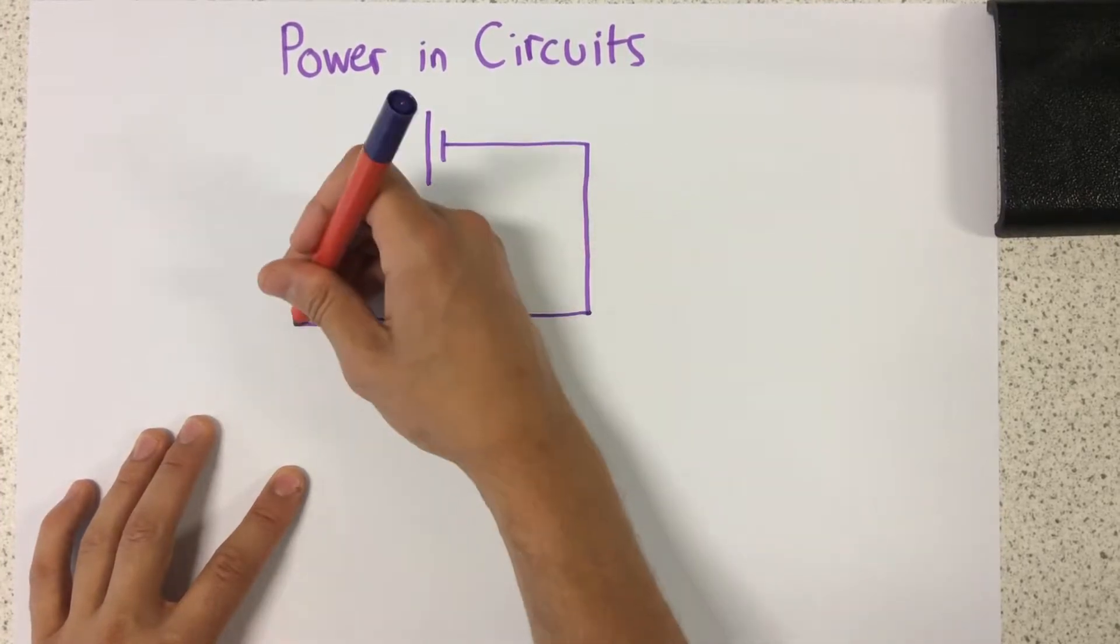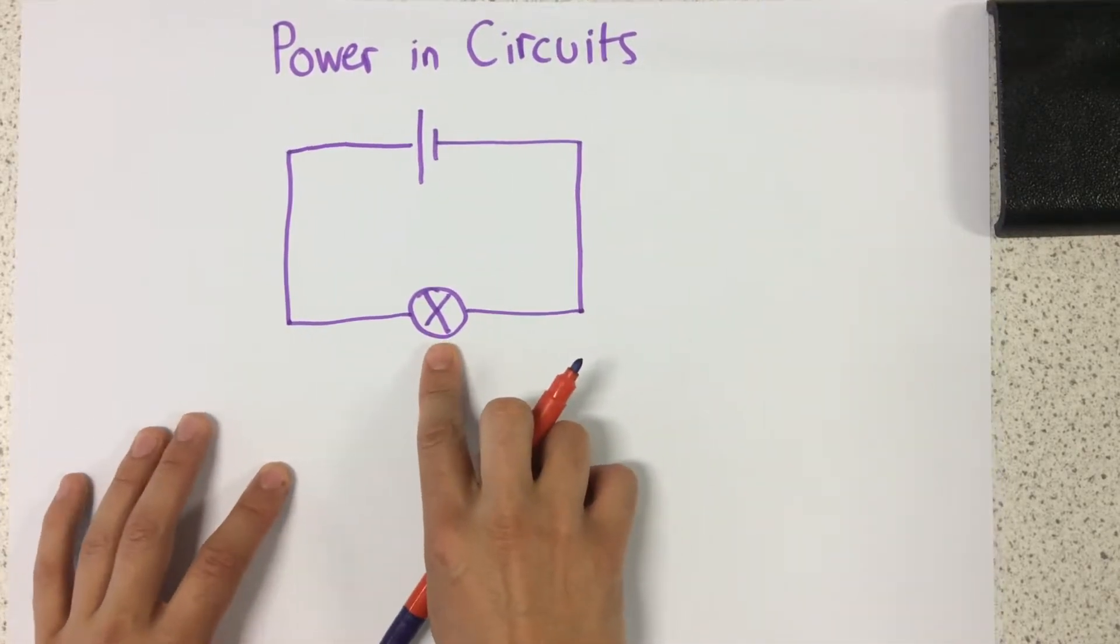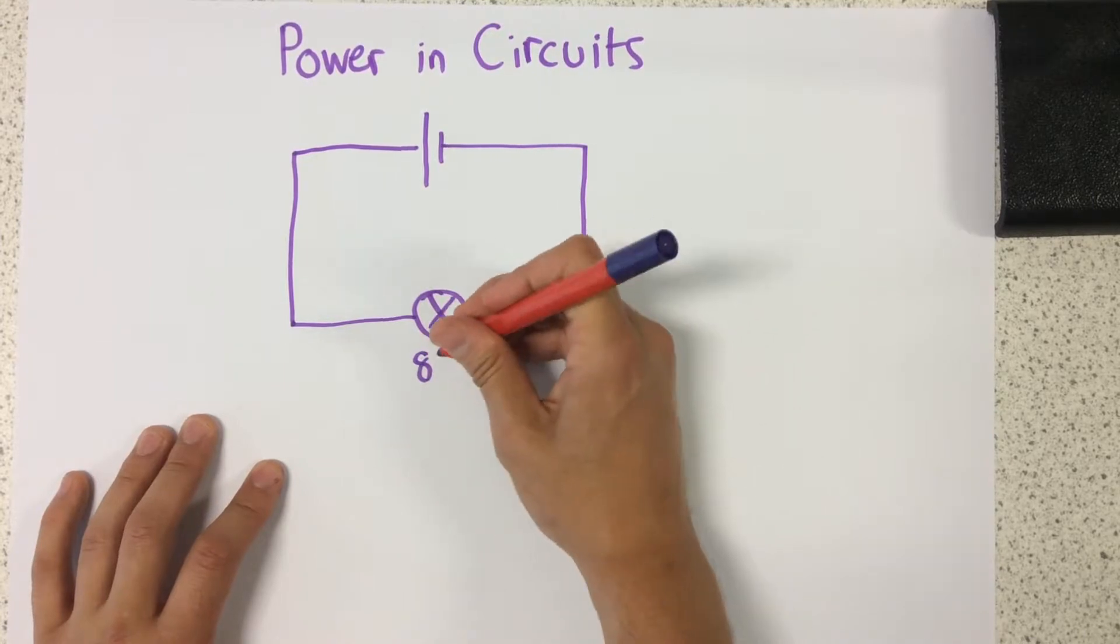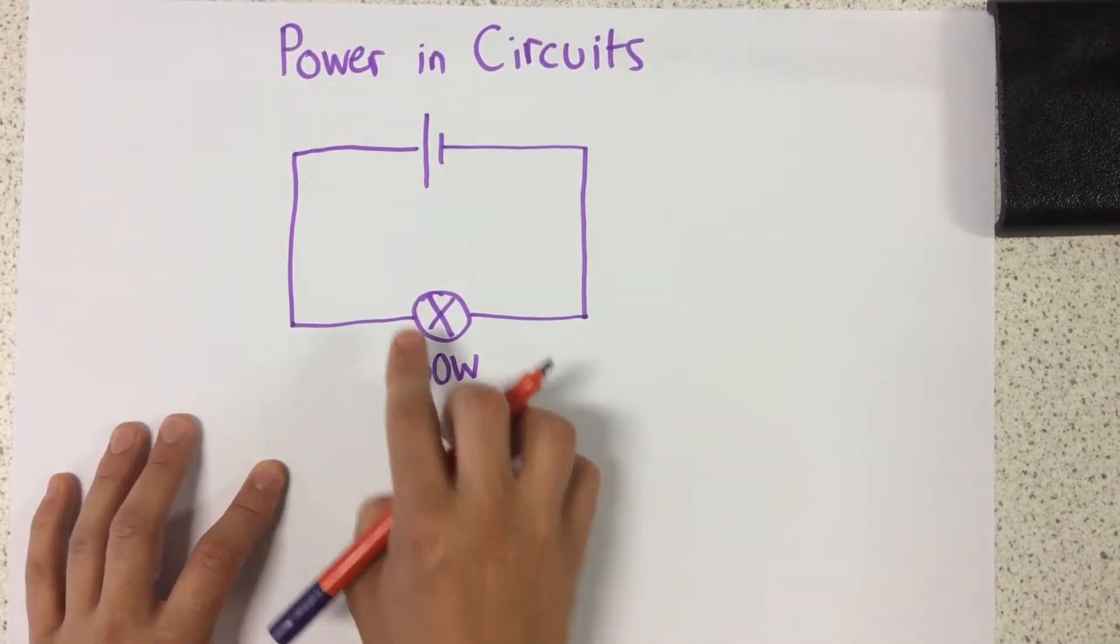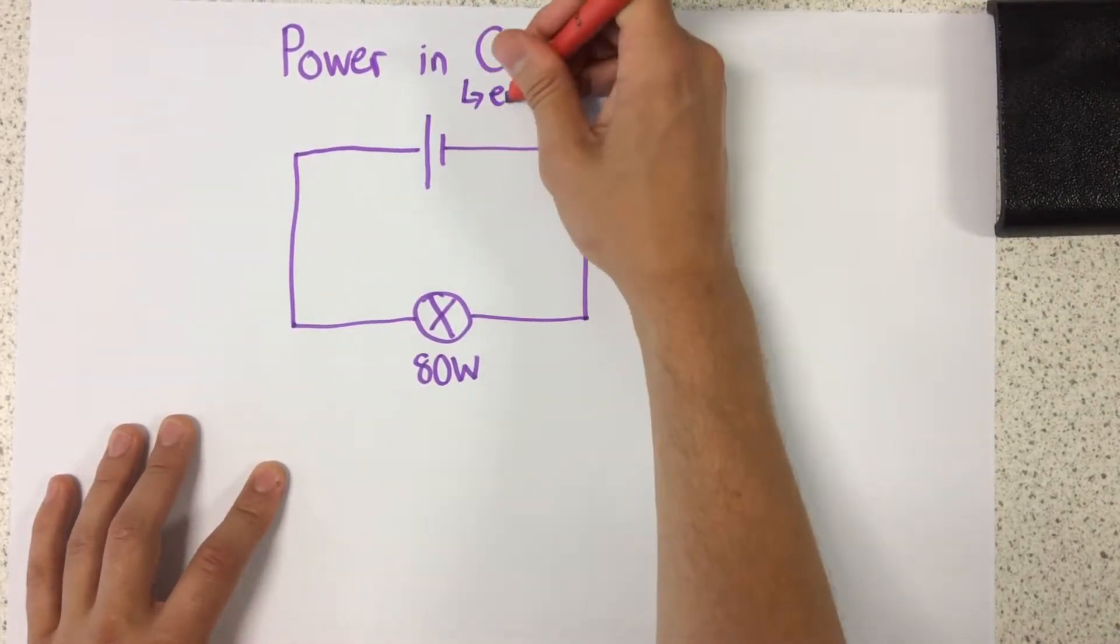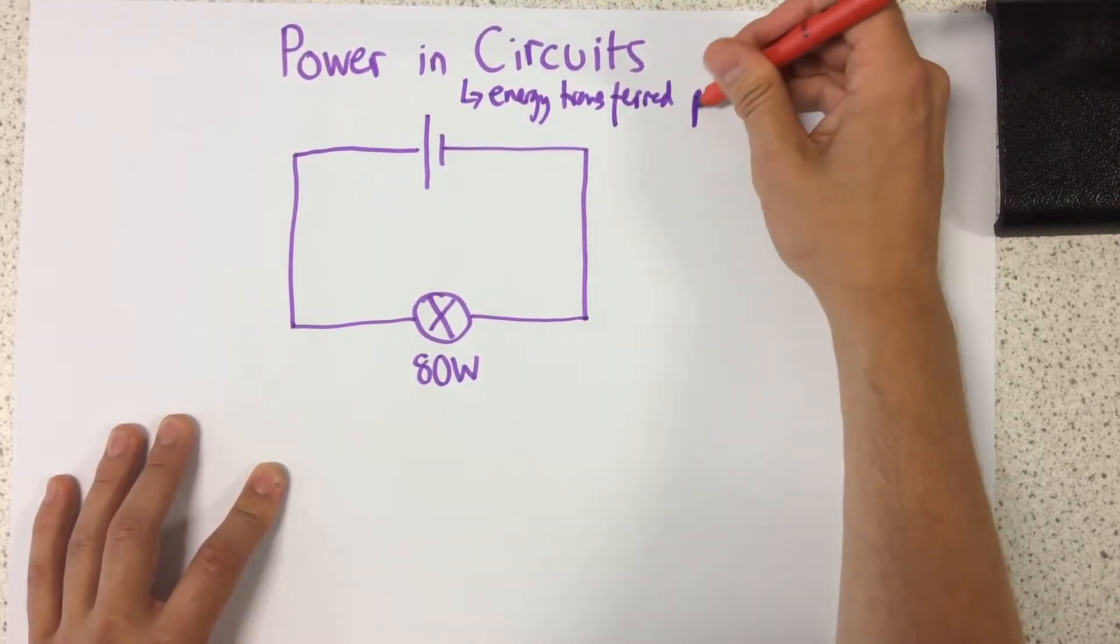All it has is a cell and a filament lamp. So, let's say this filament lamp has a power of 80 watts. Now, what power actually means is the energy transferred per second.